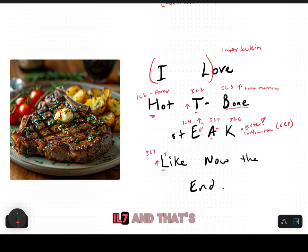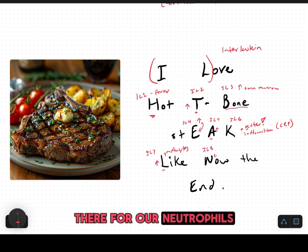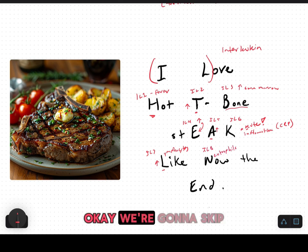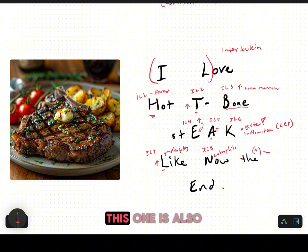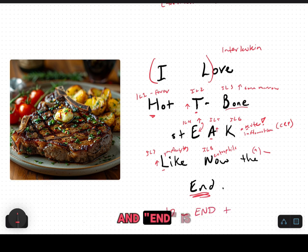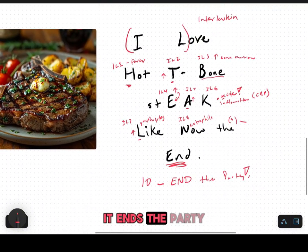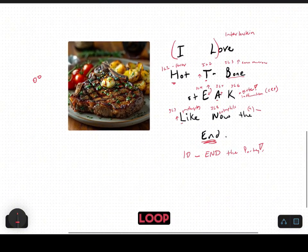Like is for interleukin seven — an increase in lymphocytes, which are our T and B cells. Interleukin eight is for our neutrophils. We're going to skip interleukin nine — it's similar to interleukin four, helps with allergic reactions and increases IgE. And end is for interleukin ten: it ends the party and stops that loop.